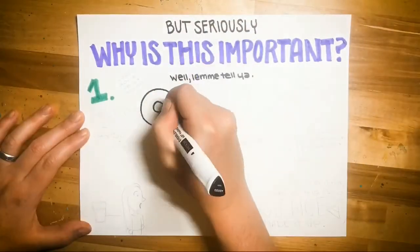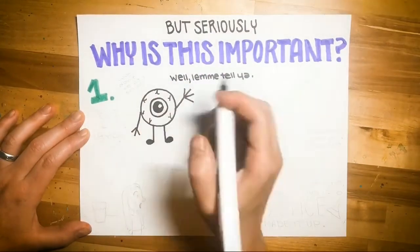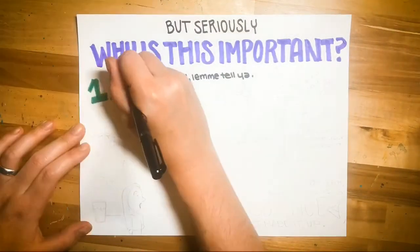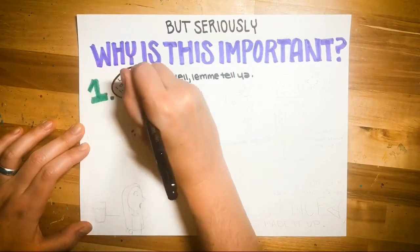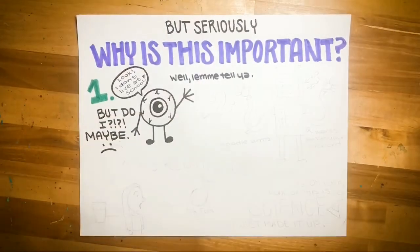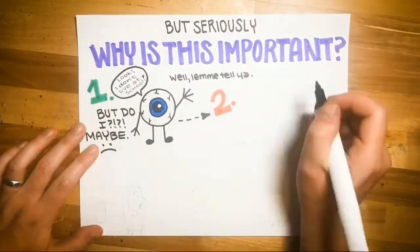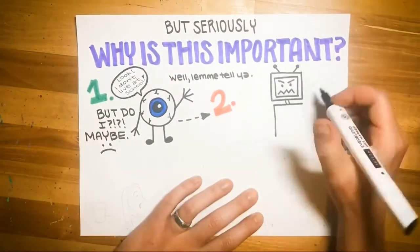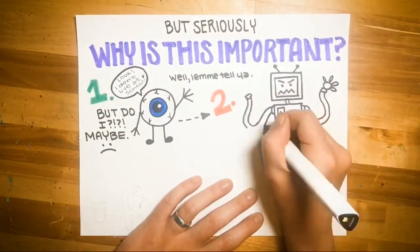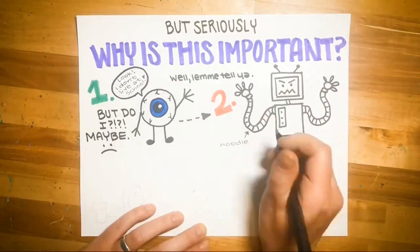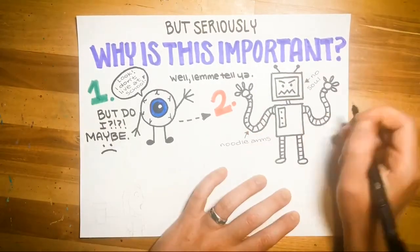Number one, you give students the ability to see what your real life looks like, because otherwise they just assume you live at school. Number two, it allows us to seem a little bit more human, which kind of gives us an edge while we're teaching — for them to think that we're not just soulless robots.